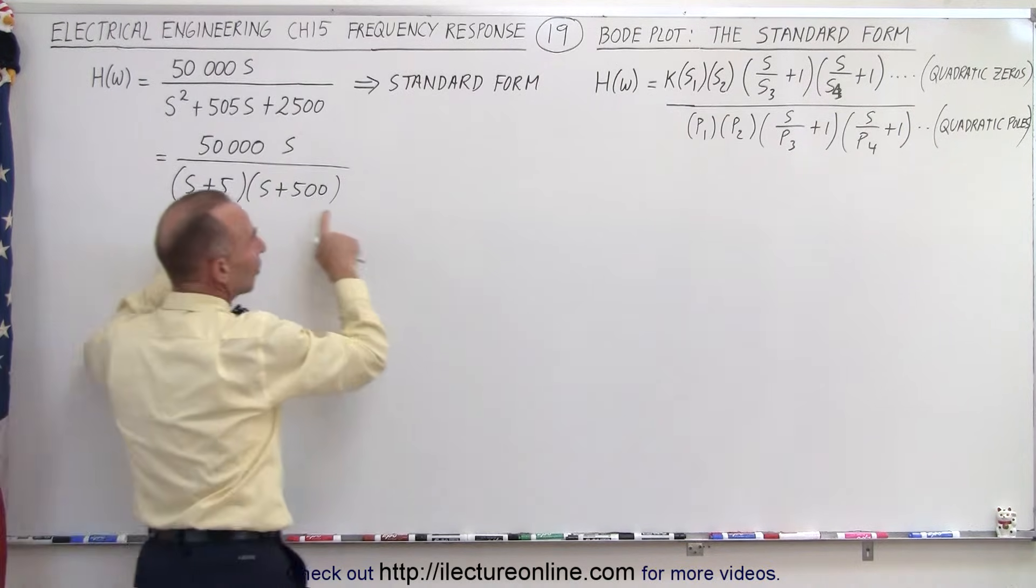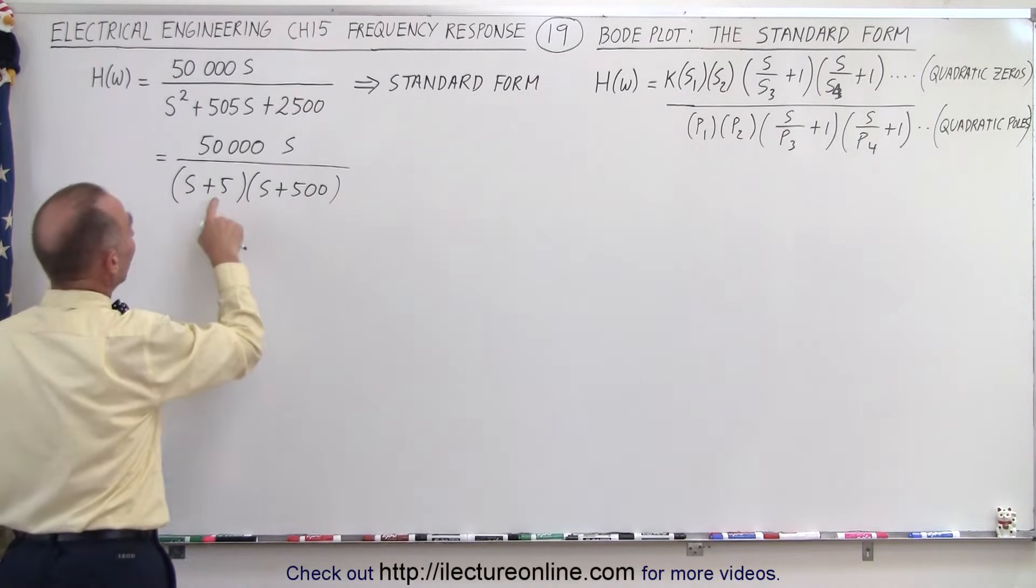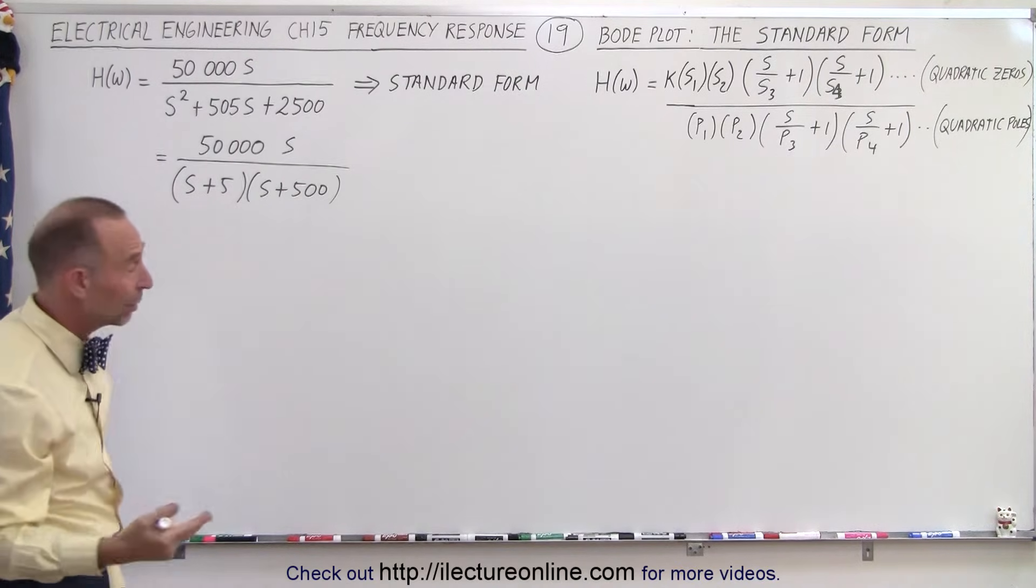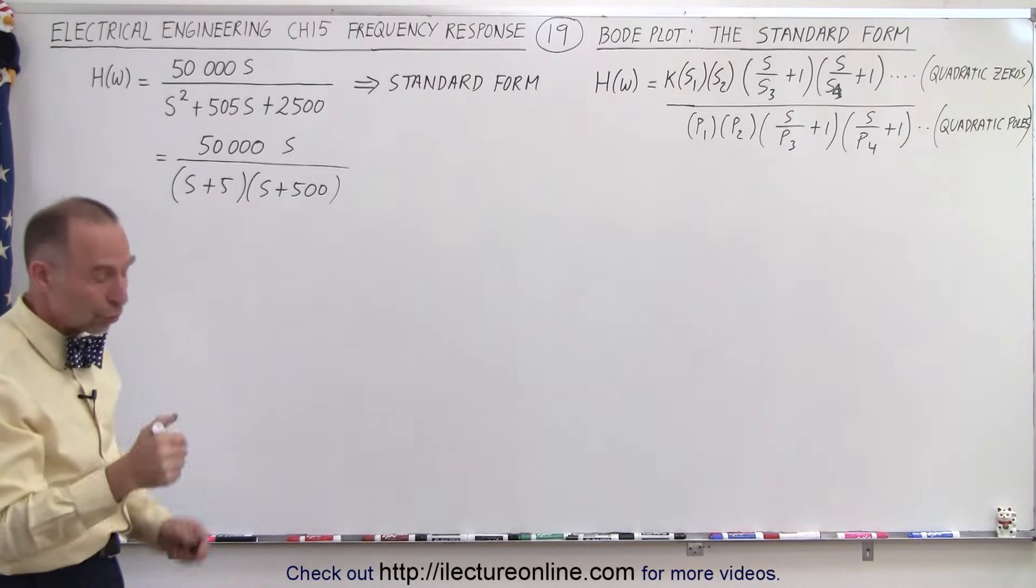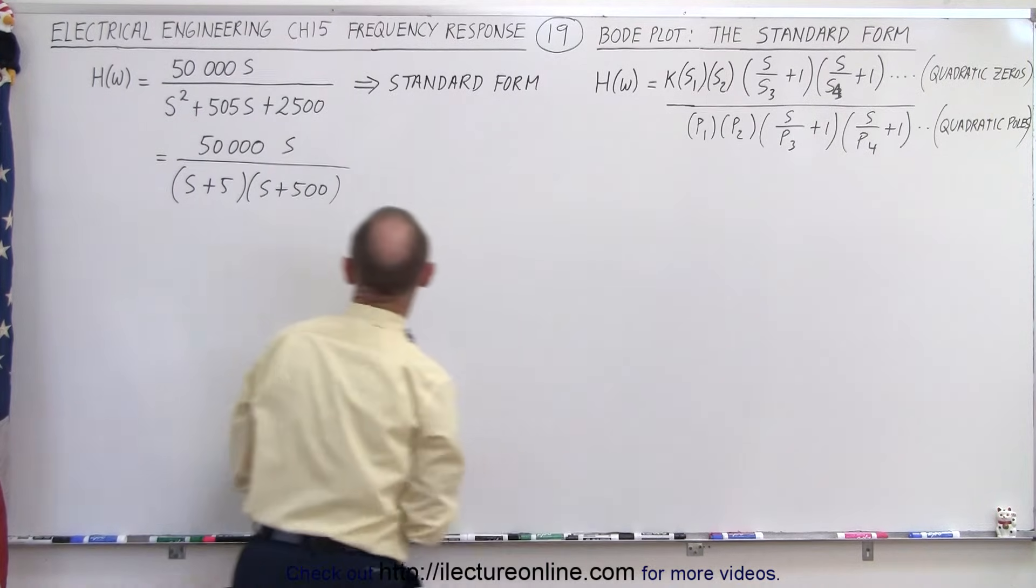Now this doesn't look like this. So what that means is we're going to have to divide this by 5, we need to divide this by 500. Of course if you do that to the denominator we must also do that to the numerator.